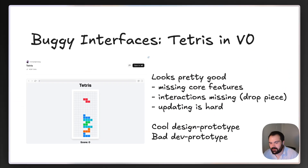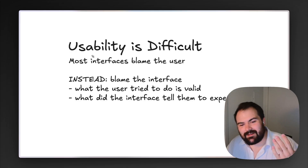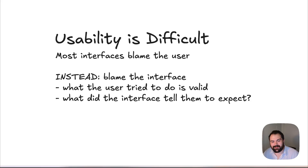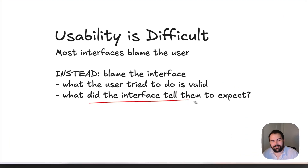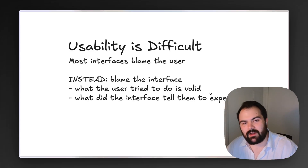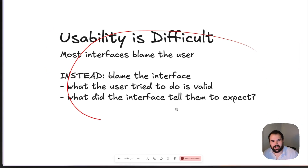Tetris looks pretty good, but it's missing core features and interactions are missing. Updating the code was hard — those updates were tricky to make. So it's a cool design prototype, but it's a really bad dev prototype. At the end of the day, usability is a difficult task. You're building a lot of UI, and making an interface that people want to use or can use is hard. A lot of interfaces put that blame on the user, but when you become a good designer, you start to blame the interface. Anything a user tries to do with your interface is totally valid — if something looks like a button and clicking it doesn't do anything, that's the interface's fault, not the user's.